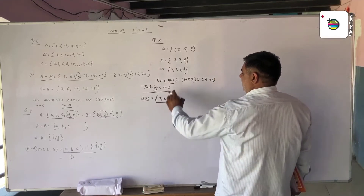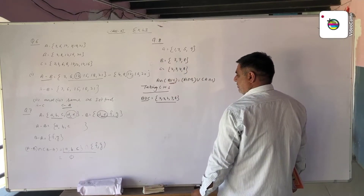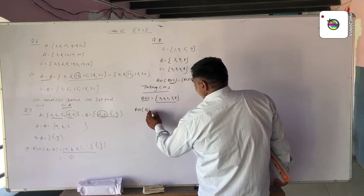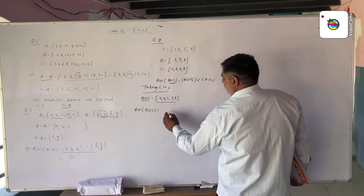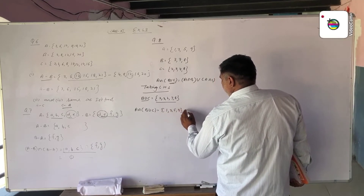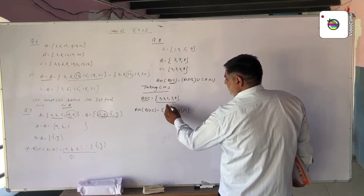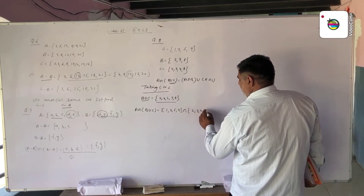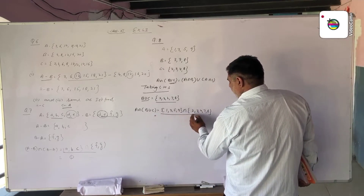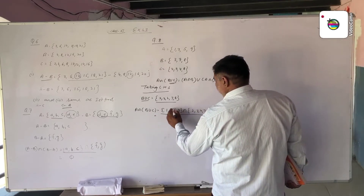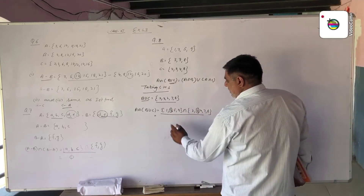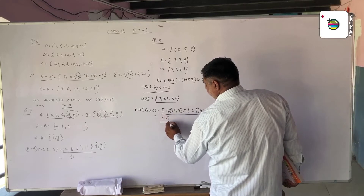We have discussed elements of B, elements of C, and the common elements. Now A intersection with (B union C): element of A is 1, 3, 5, 9 and B union C is 2, 3, 4, 7, 8. The common element is 3. So A intersection (B union C) = {3}.